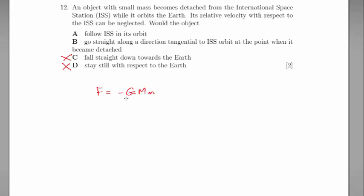little m. So big M here is the mass of the Earth, little m the mass of the object, divided by R squared. And the force, centripetal force provided, must be equal to mv squared over R.